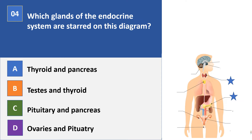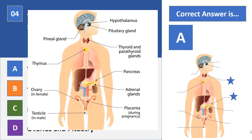Question four. Which glands of the endocrine system are starred on this diagram? Is it A: thyroid and pancreas; B: testes and thyroid; C: pituitary and pancreas; or D: ovaries and pituitary? The correct answer is A — the thyroid gland and the pancreas. This diagram details the key endocrine glands, and you'll need to know what they are, what hormones they produce, and the related effects of those hormones.